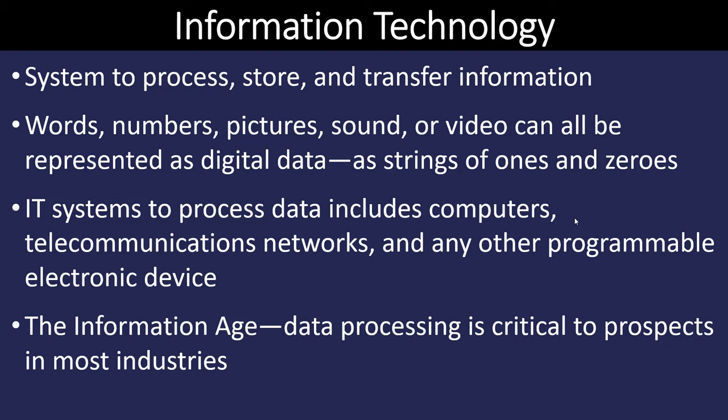Let's begin by defining what information technology is. It's a system that processes, stores, and can transfer information between devices. It can store many different things including documents, spreadsheets, pictures, and videos. All of these different types of data can be represented as ones and zeros, as that is what the computer understands and processes.